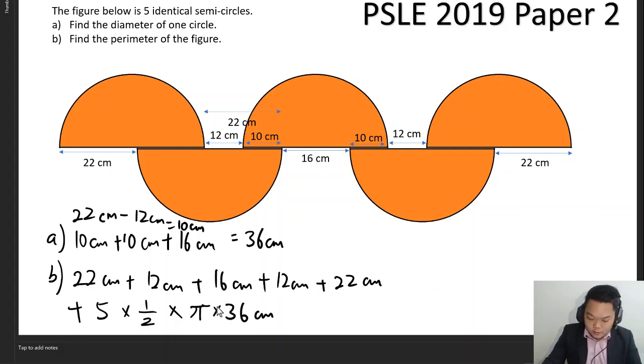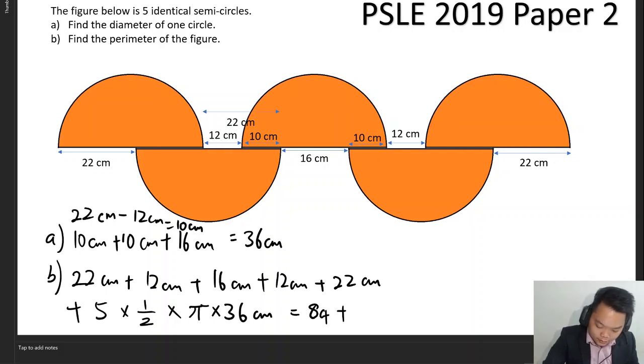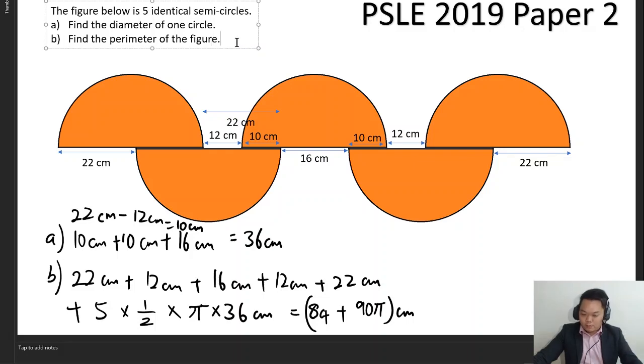Simplifying all that would give us 84 plus 90 pi cm. Take note that these papers were iterated from my students. Maybe they missed out something. It could be the case that this is not the exact same question that we are discussing. There may be some irregularities here, so I beg your pardon for that. All right, then next up.